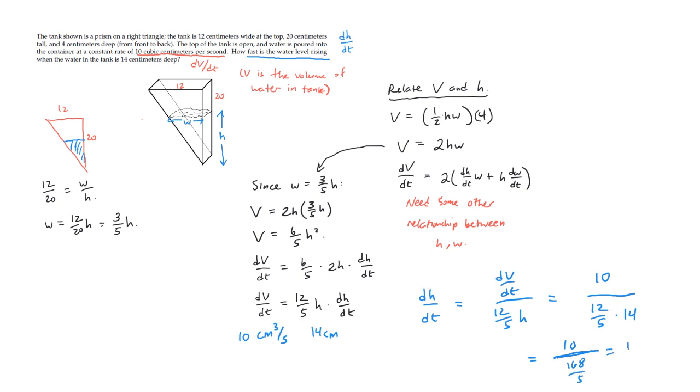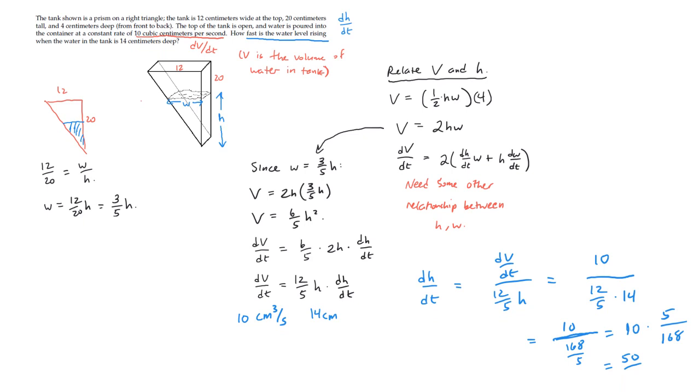And then that's going to be 10 times 5 over 168, because dividing by 168 fifths, same as multiplying by 5 over 168. That works out to 50 over 168. Move up a little bit. There we go. 168.